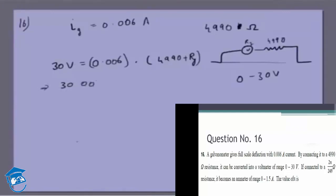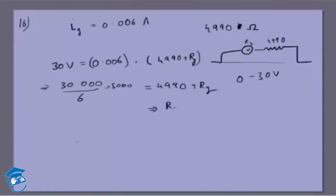Which gives me, if you take 3 here, this is 30,000 divided by 6 which is 5000, equals 4990 plus R_g, which gives you the resistance of the galvanometer, that's 10 ohm.